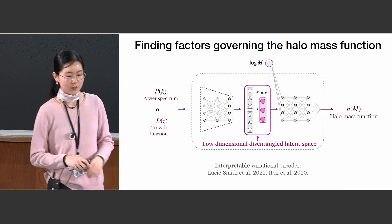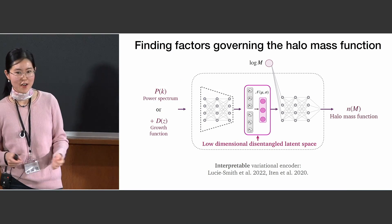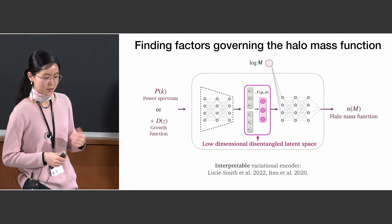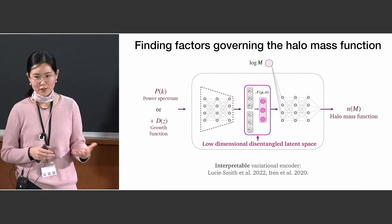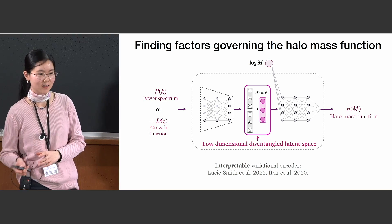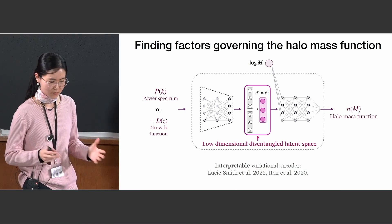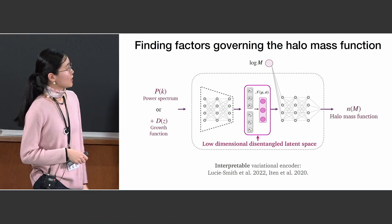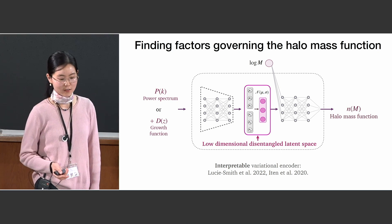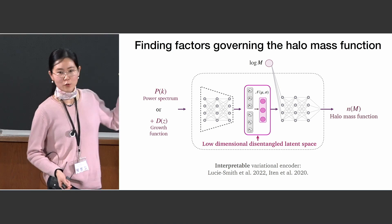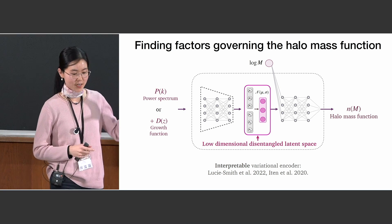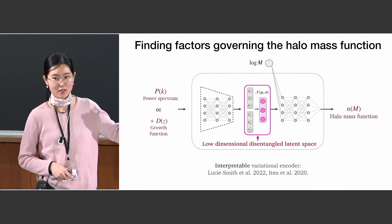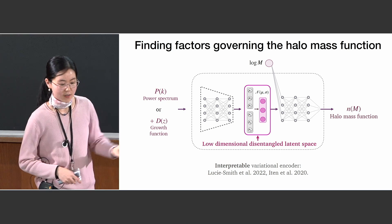To investigate this, we use a deep learning model — the Interpretable Variational Encoder — which Luisa and Jens have told us about. It was previously used to successfully find independent and physically relevant factors that govern the dark matter density profile. The key feature in this model that enables knowledge extraction is a low-dimensional latent space in the middle, which contains all the information needed from the inputs to accurately predict the halo mass function given the halo mass.